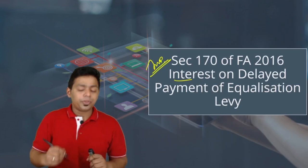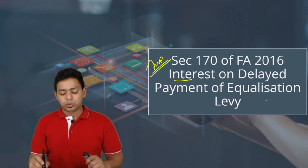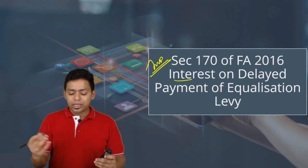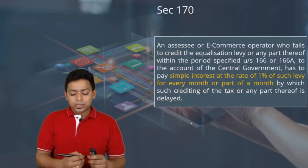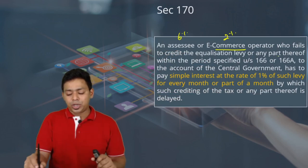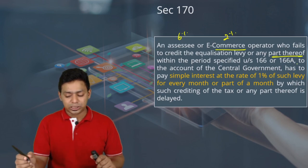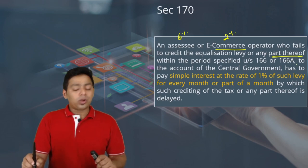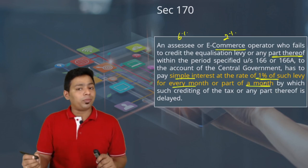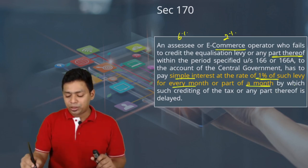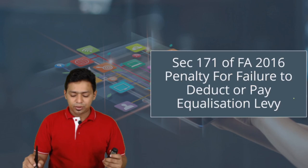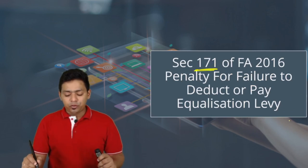Interest provisions are very important — this section was targeted in examinations. If you do not deposit the equalization levy within the time, interest and penalty will apply. An assessee (for 6 percent) or e-commerce operator (for 2 percent) who fails to credit equalization levy to the account of the central government within the period specified under Section 166 or 166A has to pay simple interest at 1 percent for every month or part of the month by which such crediting is delayed.